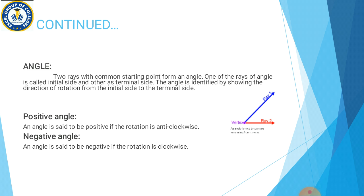One of the rays of an angle is called the initial side and the other as the terminal side. The angle is identified by showing the direction of rotation from initial side to terminal side. Angle basically ek figure hai jo do rays se milke banti hai, jinhe hum sides of angle kehte hain, jo ke common end point share karte hain jise vertex kehte hain.